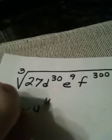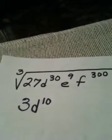The cube root of 27 is 3. 3 times 3 times 3 is 27. And each one of these powers gets divided by 3, leaving me with D to the 10th. 30 divided by 3 is 10.